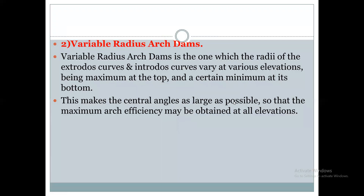This is a variable radius arch dam. The radius of the extrados curve and the intrados curve vary at various elevations. At different heights of the dam, the radius will be different. Inside curves and outside curves both vary, being maximum at the top and minimum at the bottom of the dam.